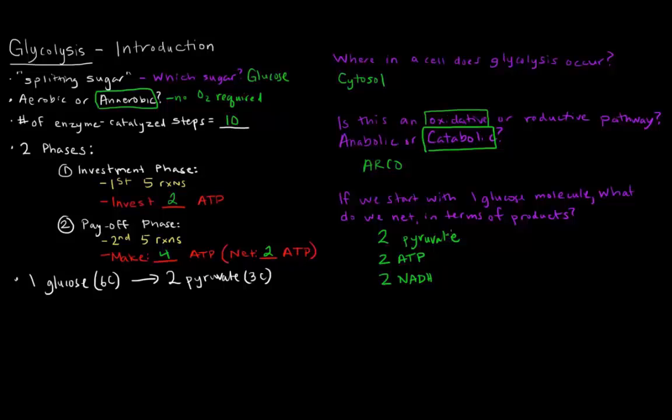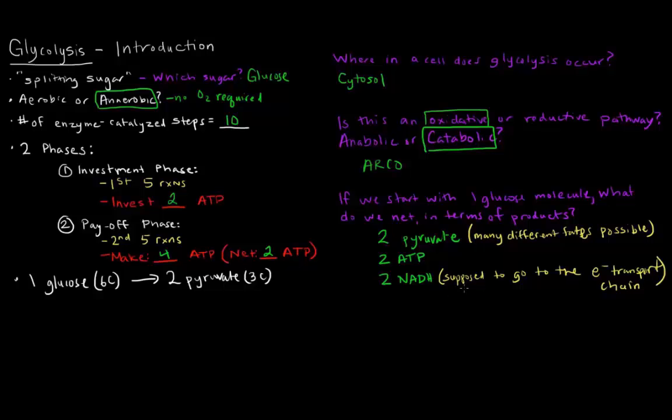The pyruvate has different possible fates. Let me note that here. Depending on whether or not there's oxygen available, which I'll get to later, there are many different fates possible for pyruvate. It can go on to the TCA cycle or it can be fermented, which, again, we'll talk about later. Two ATP, which, of course, can be used for energy. And two NADHs, which are supposed to go to the electron transport chain, to be re-oxidized to generate energy. Again, we'll talk more about that later. But hopefully that was a good little introduction as far as what glycolysis is all about. Thanks for watching.